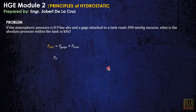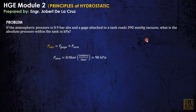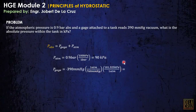This is unit analysis. The atmospheric pressure is 0.9 bars. In every 100 kilopascal we have 1 bar, so bars cancel out and we get 90 kilopascal. Now we convert the gauge pressure: 390 mmHg, using 1 atmosphere equals 760 mmHg and 1 atmosphere equals 101.325 kilopascal. The result is negative 52 kPa — it is negative because it is vacuum.